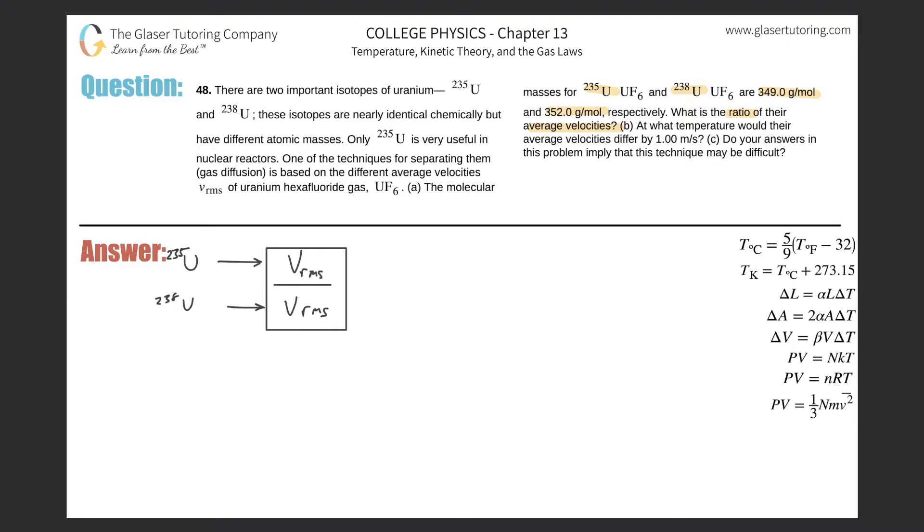So what I'm going to do is put the velocity, the root mean square velocity of U-235 in the numerator, and the root mean square velocity of U-238 in the denominator. Now recall that the root mean square velocity equals the square root of three times the Boltzmann constant times temperature all divided by M. If you're wondering where this formula came from, we have a general video out under the kinetic theory of gases section.